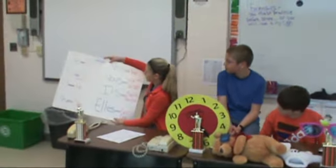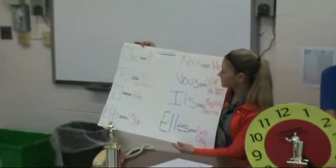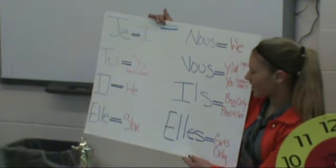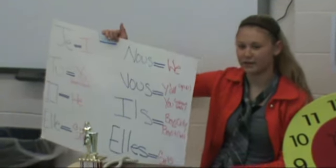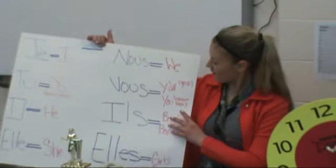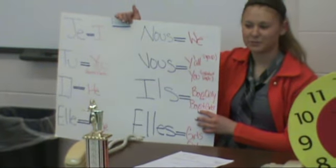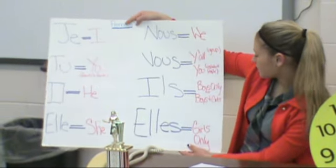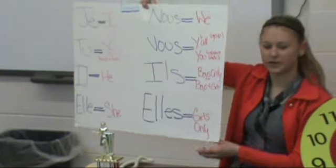These are the different pronouns: je means I, tu is you if you're talking to friends and family, il is he, elle is she, vous can be two things — it can either be like y'all, a group of people, or you if you're talking to important people like the president. Ils is boys only or boys and girls, and elles is just girls only.